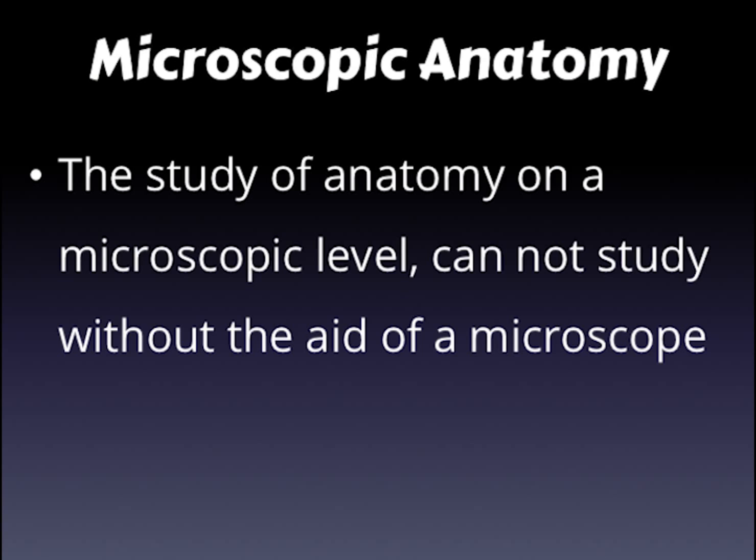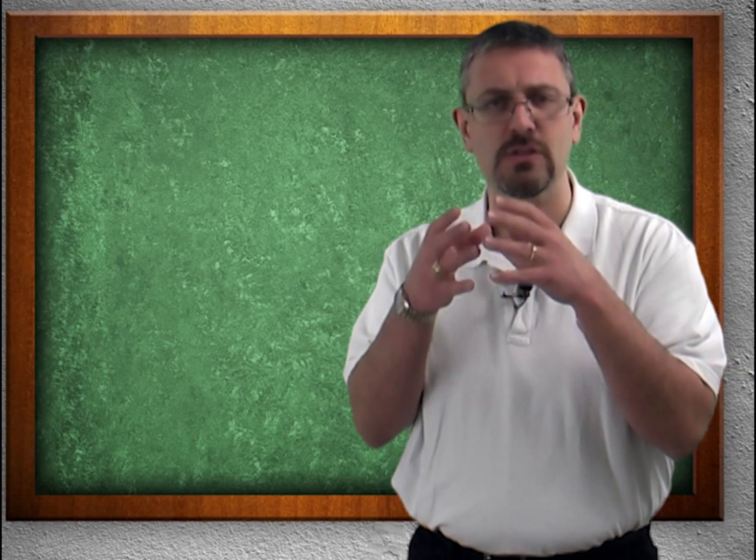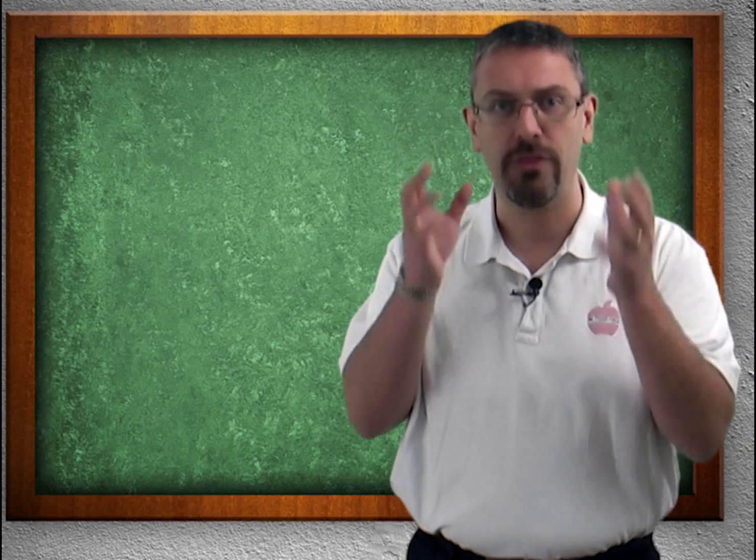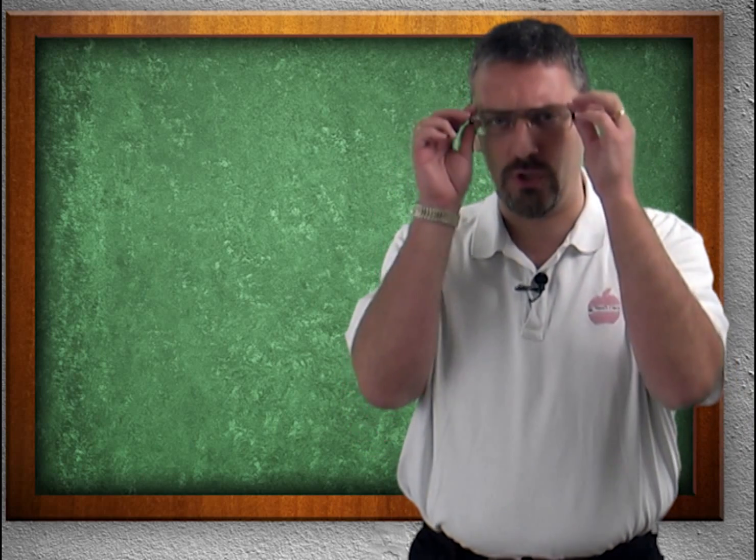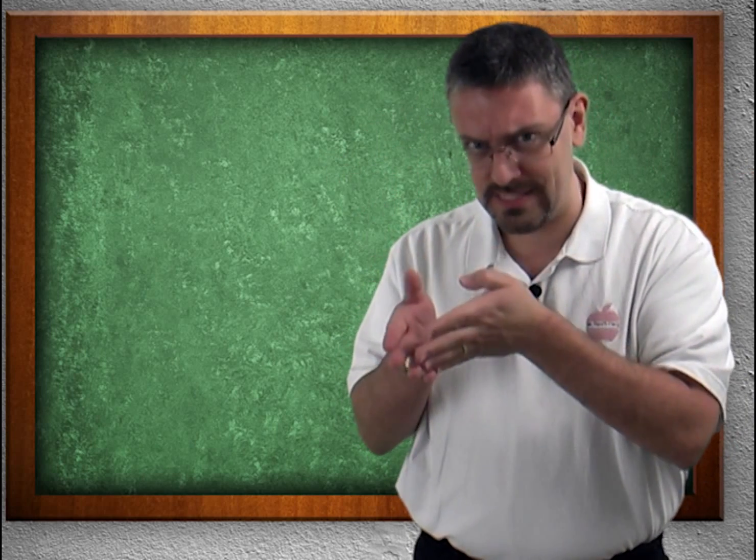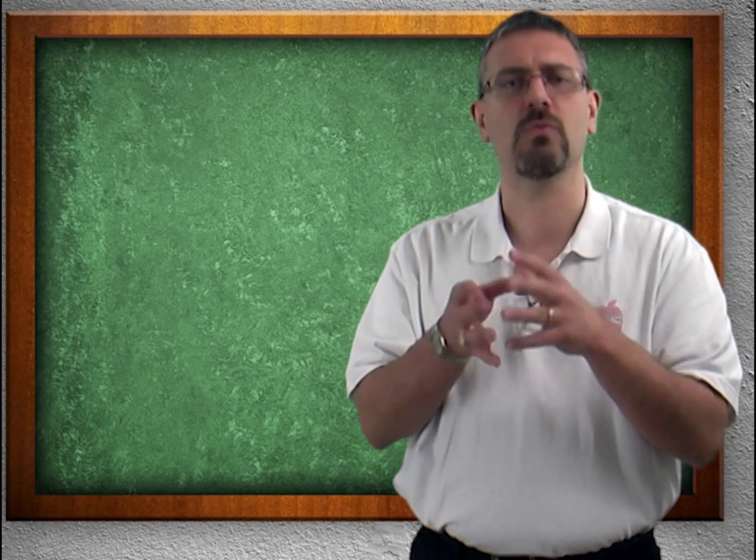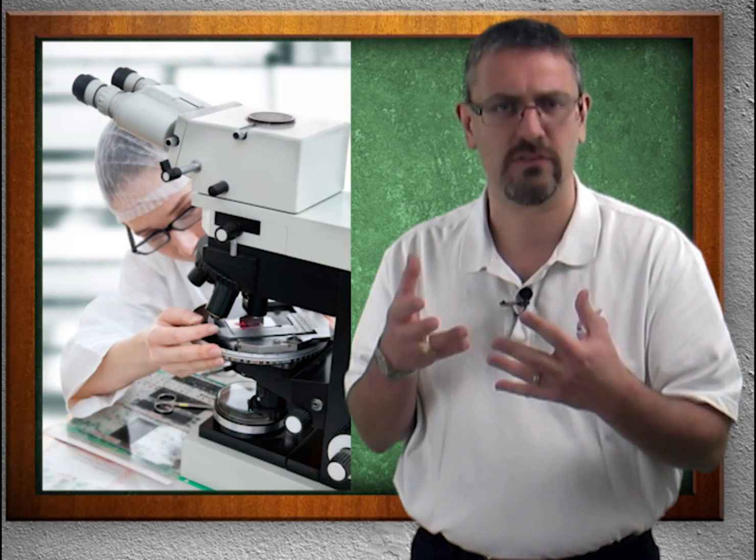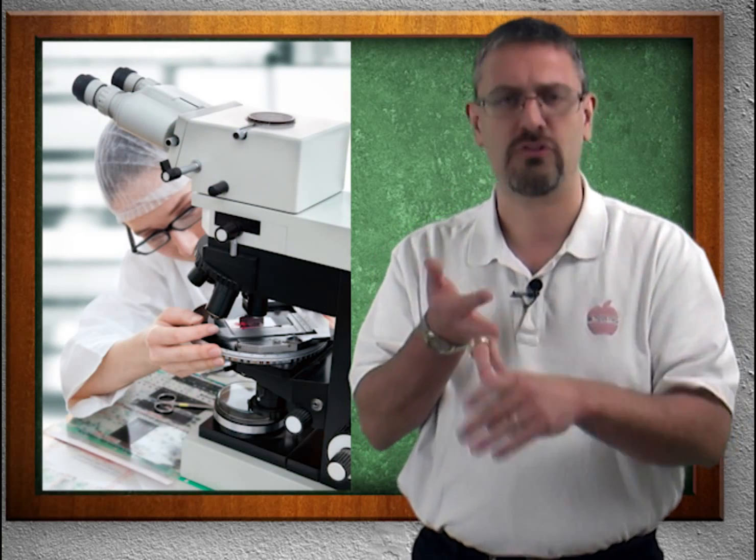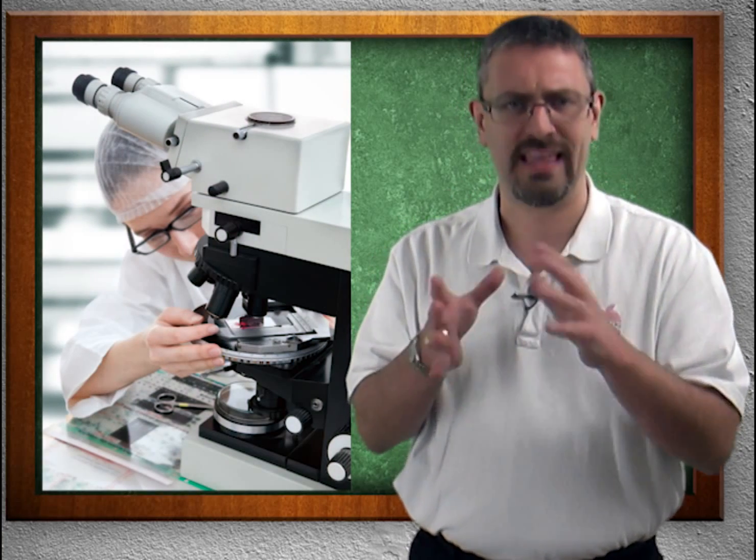We have microscopic anatomy. Microscopic anatomy is the study of anatomy using things to see it with. Horrible explanation. Let me clarify this for you. With microscopic anatomy, something is too small for us to see with our unaided eye. No matter how good your eyesight might be, you're not seeing it. You have to have some sort of visual device, a microscope, an electron scanning microscope, something else to see it.